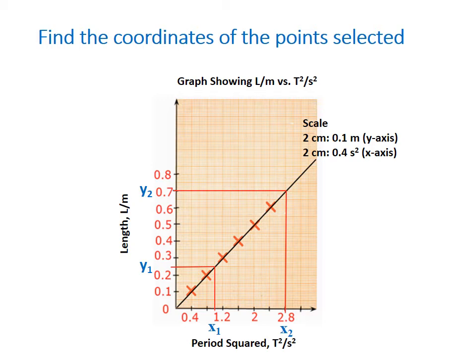So we're going to find the coordinates for these points that we would have selected. So the point right here, y2 is 0.7. So you can see we draw lines to see exactly where these points fall. So it's 0.7, and the other one is 0.25, because it is halfway between 0.2 and 0.3.